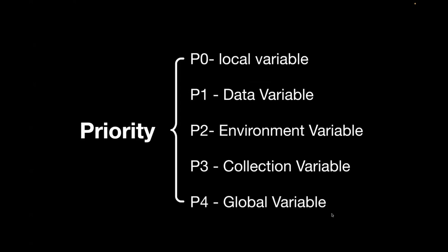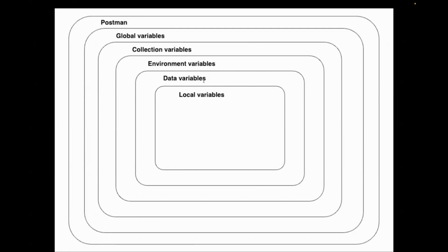This is only the case when you have the same variable name across all scopes. This is a sample diagram of variable scope downloaded from the Postman official website. Local variable is your top priority, then comes data, then environment, then collection, and last we have global variables.